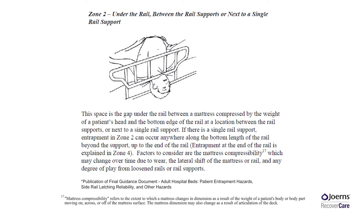Zone 2 – Under the rail, between the rail supports, or next to a single rail support. This space is the gap under the rail between a mattress compressed by the weight of a patient's head and the bottom edge of the rail at a location between the rail supports. Factors to consider are mattress compressibility, which may change over time due to wear, the lateral shift of the mattress or rail, and any degree of play from loosened rails or rail supports. Zone 2 failures are one of the more common zones that cause entrapment risk.